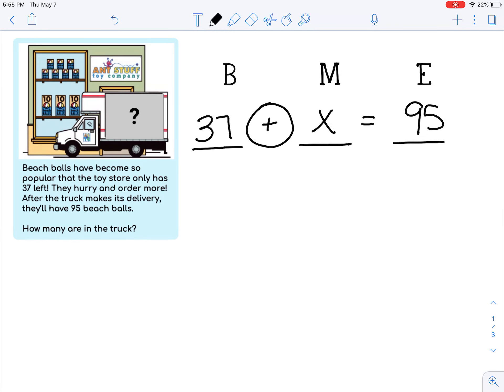Okay, for this problem it should have been set up like this: 37 plus x equals 95. So let's reread the problem. Beach balls have become so popular that the toy store only has 37 left. They hurry and order more. After the truck makes its delivery, they'll have 95 beach balls. How many are in the truck? So again, it's very important to think about what we already know, what the problem wants us to figure out, and then that will help us solve.